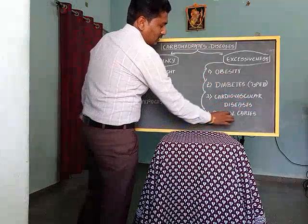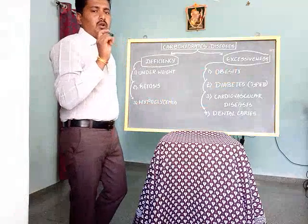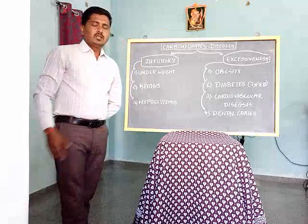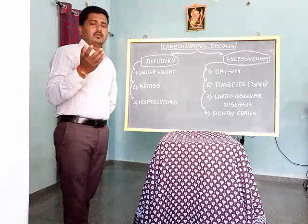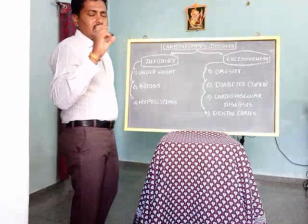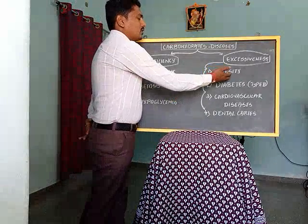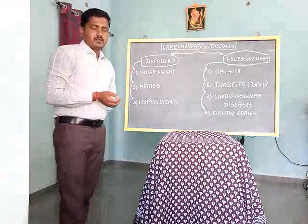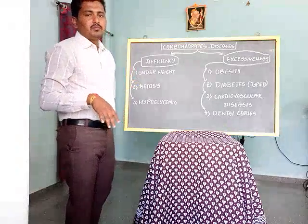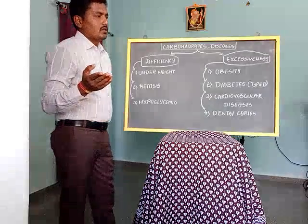Obesity: a BMI of more than 25 is called overweight, and more than 30 is called obesity. Obesity has first, second, and third grades. A person with third grade obesity has a BMI of more than 40. As the obesity grade increases, comorbidity and disease conditions also increase. Obese persons face several problems: mobility problems, digestion problems, walking problems, respiratory problems, heart-related diseases, and even cancer.